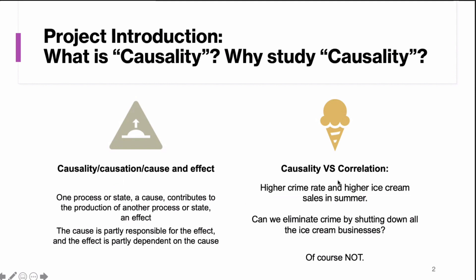Causality is different from correlation. One example I really like to use is that in summer we have higher crime rates and higher ice cream sales — they have a positive correlation, but there's no causality between them. We can't eliminate crime by shutting down all the ice cream businesses. That's because there's only correlation and no causation, and that's why causality is very important.